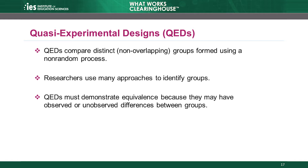Studies that use a QED must demonstrate equivalence and cannot receive the WWC's highest rating. The highest rating a QED can receive is meets WWC group design standards with reservations. QEDs, RCTs with high attrition, and RCTs with compromised random assignment all must demonstrate equivalence.